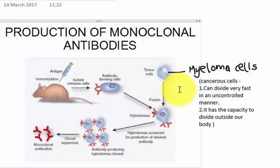HAT stands for hypoxanthine-aminopterin-thymidine medium. The unfused myeloma cells can be selected against using media containing HAT. The HAT medium is generally used in cell culture for post-fusion selection to eliminate certain types of myeloma cells. In this way, we separate the hybridoma cells from the unfused myeloma cells.